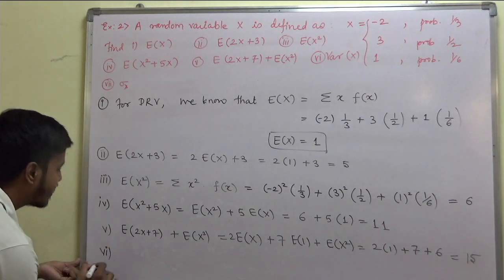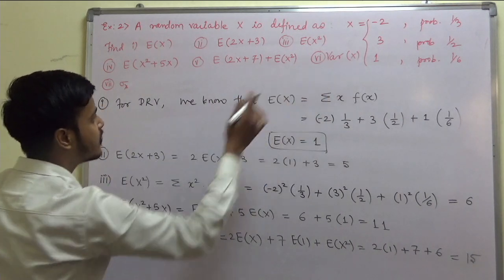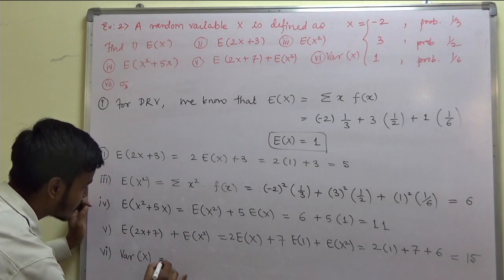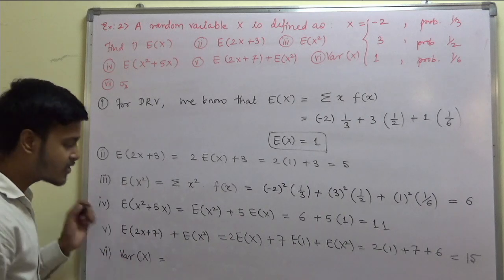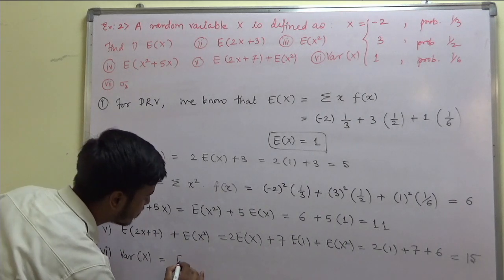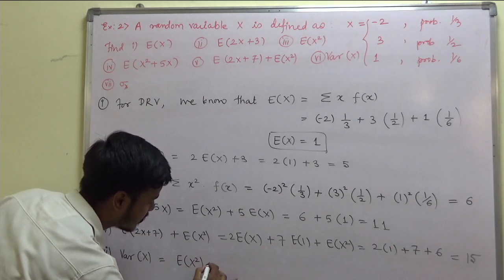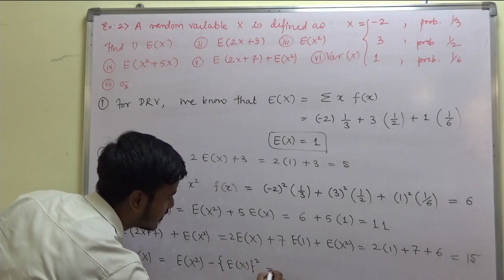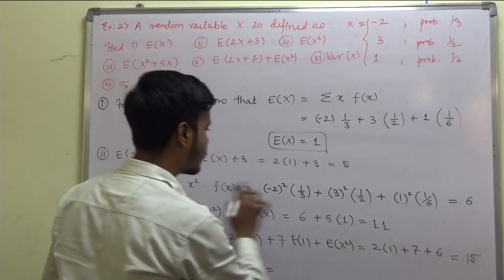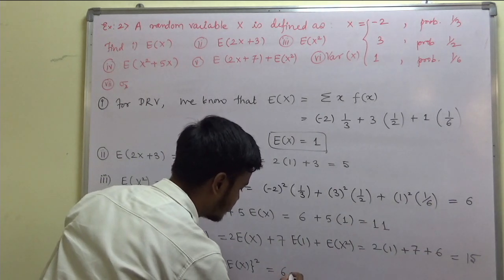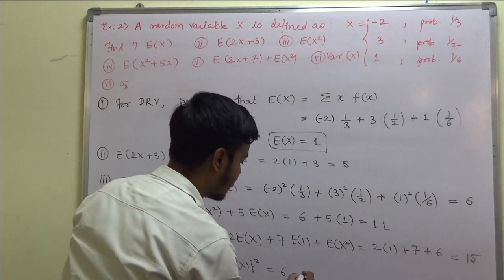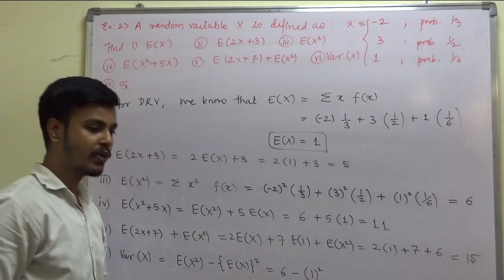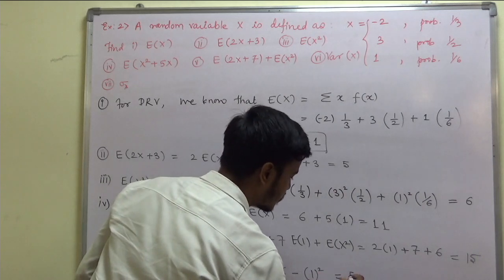The sixth one is variance of x. Variance of x is expectation of x squared minus expectation of x, whole squared. Expectation of x squared is 6, minus expectation of x whole squared — expectation of x is 1, so 1 squared is 1 — and this comes out to be 5.